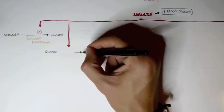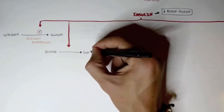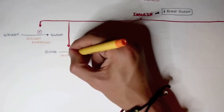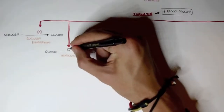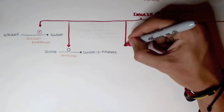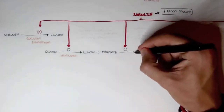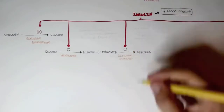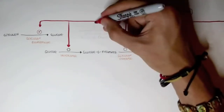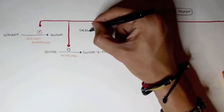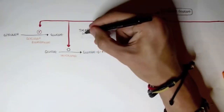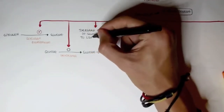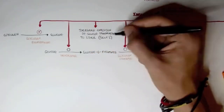Insulin promotes glucose conversion to glucose-6-phosphate by stimulating the enzyme hexokinase. Insulin also stimulates the conversion of glucose-6-phosphate through a series of enzymes to glycogen — essentially stimulating glycogen synthase, the enzyme for glycogen synthesis. Insulin also increases the expression of glucose transporters in the liver, increasing glucose transport to the liver via GLUT2 transporters.